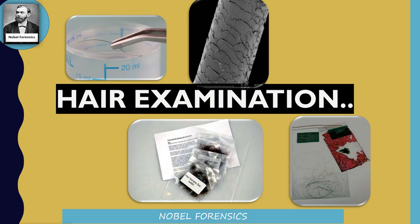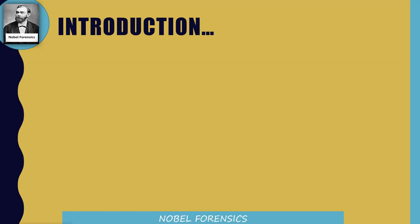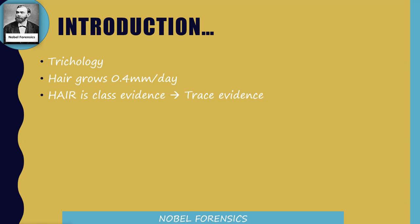Pulled out hair contains a follicle or root, which helps to determine the blood group and also DNA. This hair evidence will help as evidence for a longer time because the outer layer of hair can remain for a long time. Coming to the basics of hair — trichology is the study about hair. In general, hair grows 0.4 mm per day.